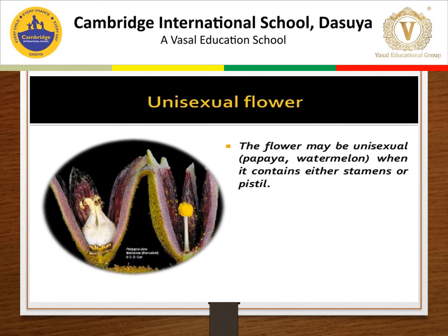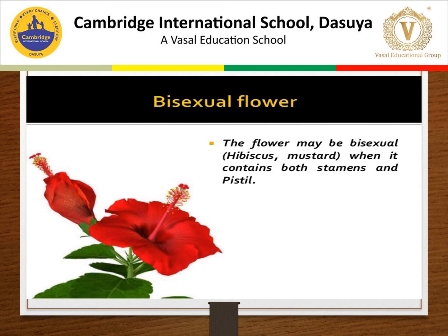There are two types of flowers: unisexual and bisexual. A unisexual flower contains either stamen or pistil — examples are papaya and watermelon. Bisexual flowers contain both male and female reproductive parts in the same flower — examples are mustard and hibiscus.